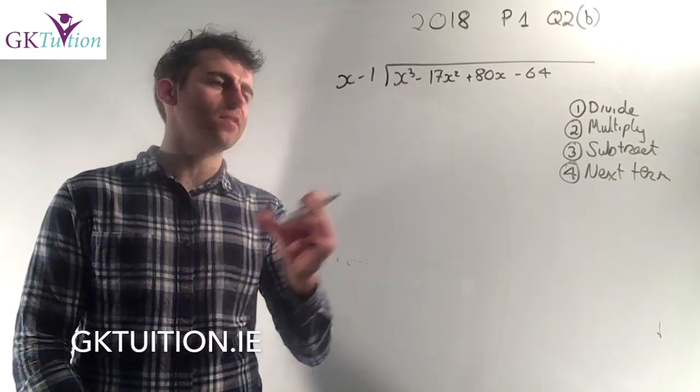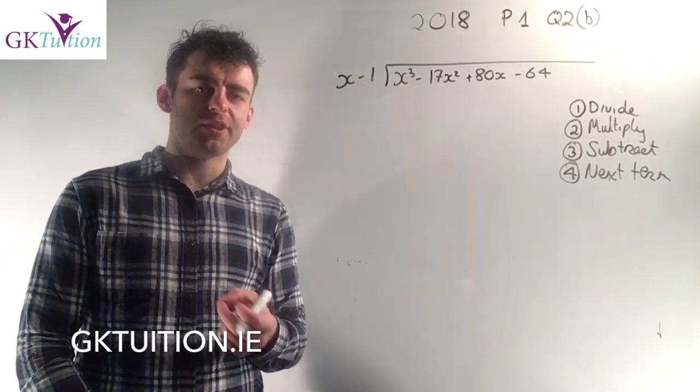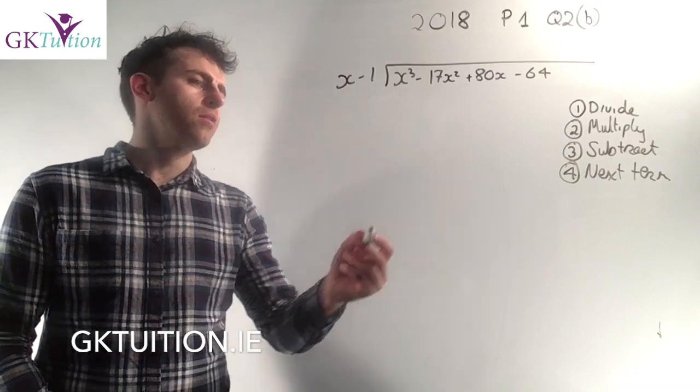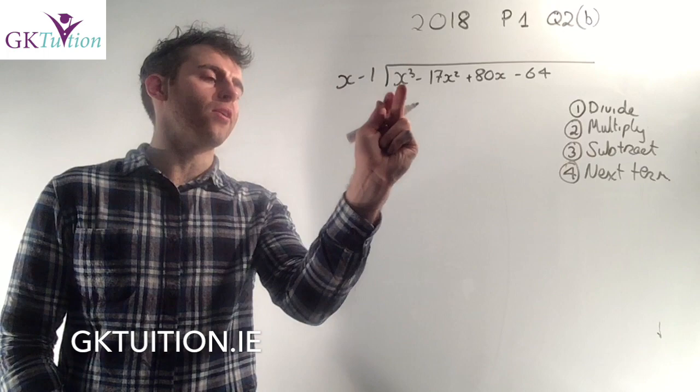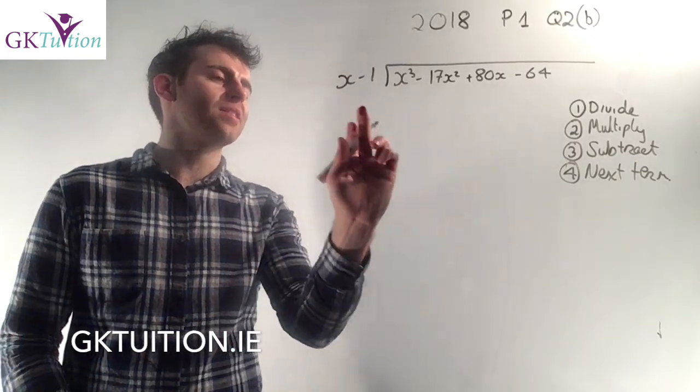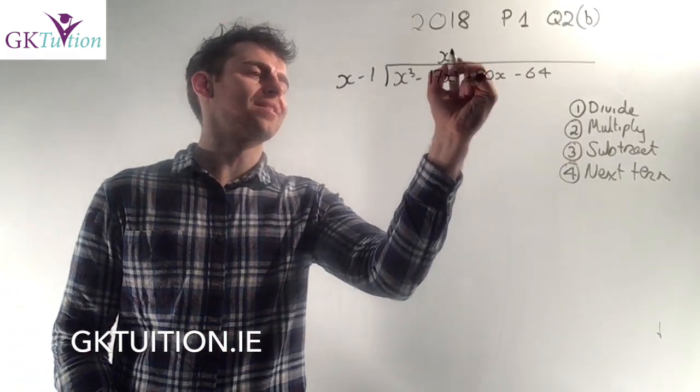Okay, so if I know x minus 1 is a factor of this cubic, I use long division to find the other factors. There's four steps to your long division. The first thing you always do is divide. The first thing here into the first thing here. x divided into x cubed goes x squared times.